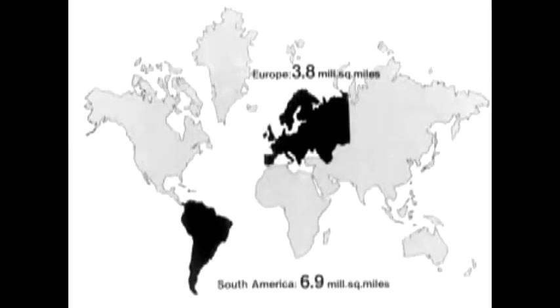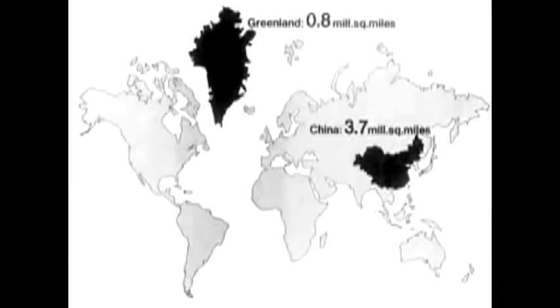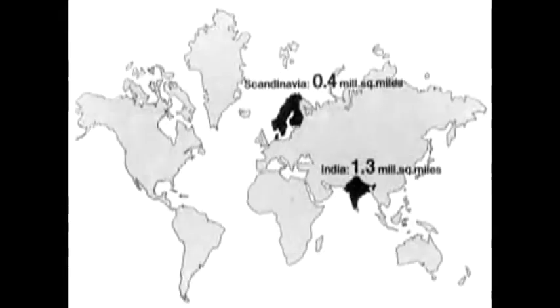Europe's 3.8 million square miles are shown as larger than South America's 6.9 million square miles. In reality, China is over four times the size of Greenland, but Mercator's map shows China as substantially smaller. Scandinavia, with only 0.4 million square miles, is shown here dwarfing India's 1.3 million square miles, which is three times larger.